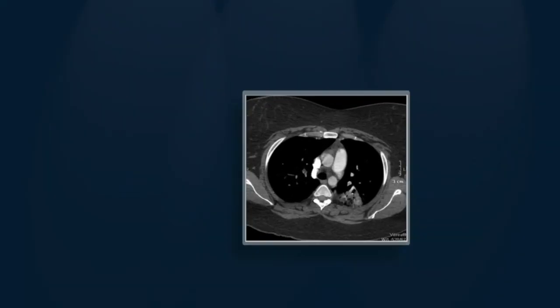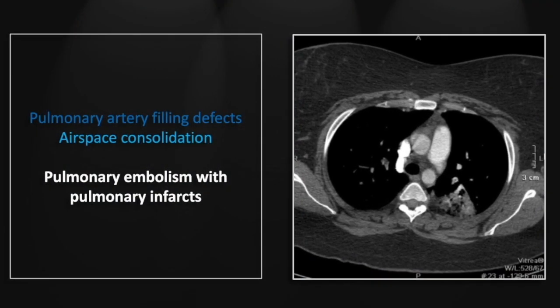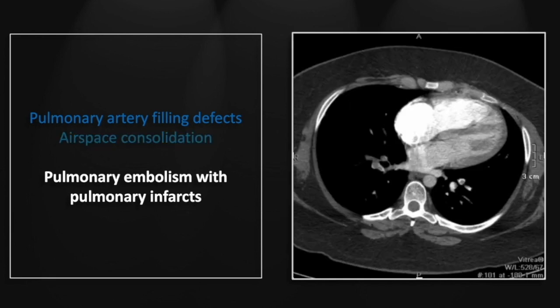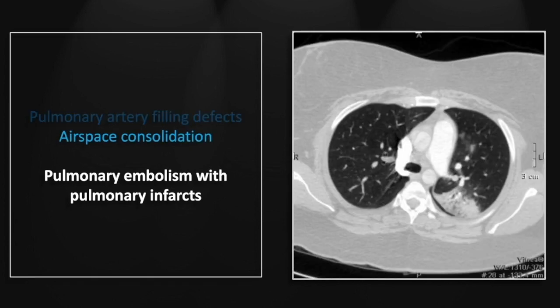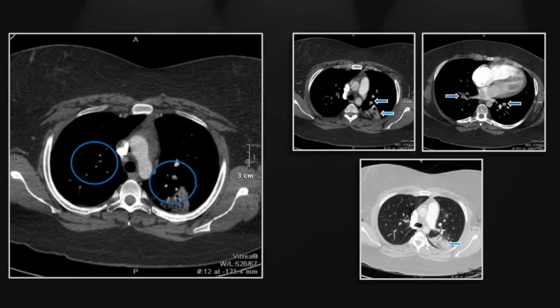Our next case is a pulmonary embolism with multifocal pulmonary infarcts. The filling defects are present in multiple pulmonary arterial branches, and there are multiple wedge-shaped peripheral regions of consolidation consistent with pulmonary infarcts. Filling defects are again seen in the lower lobes, and there is interventricular septal straightening consistent with right ventricular strain. On the lung windows, well-demarcated peripheral consolidation consistent with a pulmonary infarct.